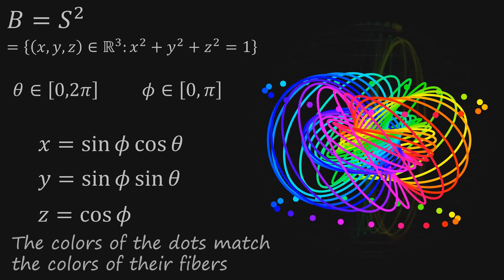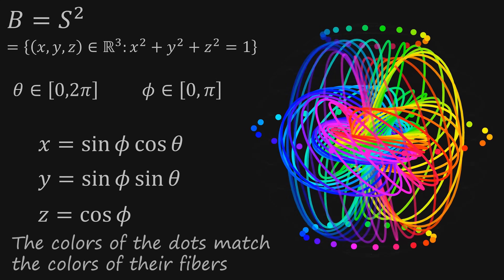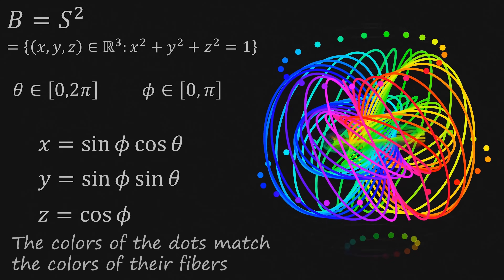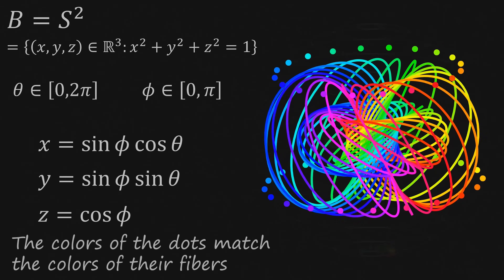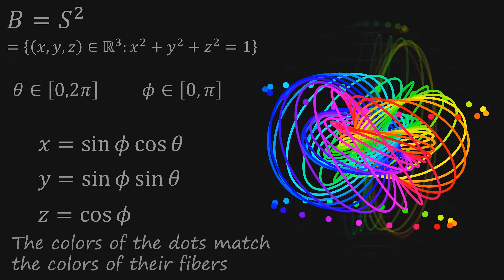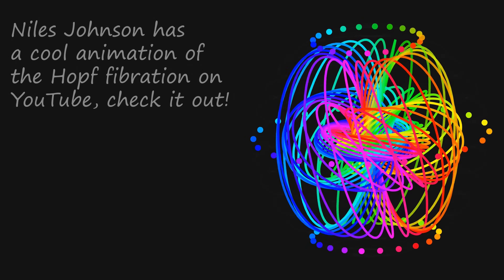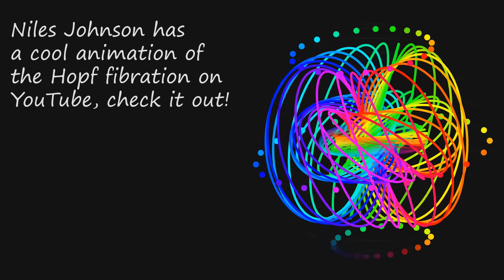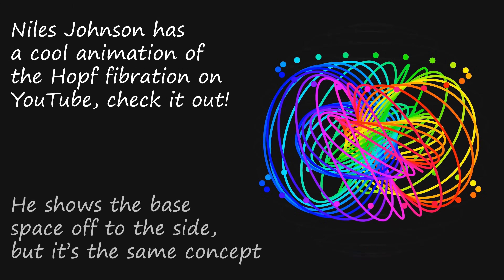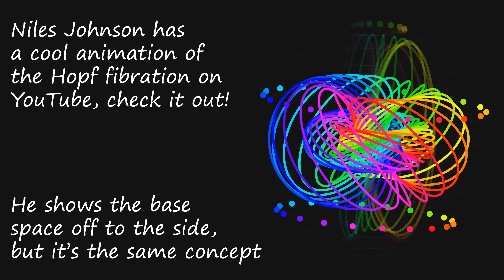I want to emphasize that in this animation, I'm just picking and choosing certain values of phi and theta to show you — I'm sampling the base space. I'm not showing the whole thing at once, because that would just be a huge messy tangle of fibers. By sampling it and moving that sample around, you kind of have to look between the lines — take all the moments in totality, and you can see how, as we sweep along the base space, it generates these fibers and you can get a feel for how they're all tangled together.